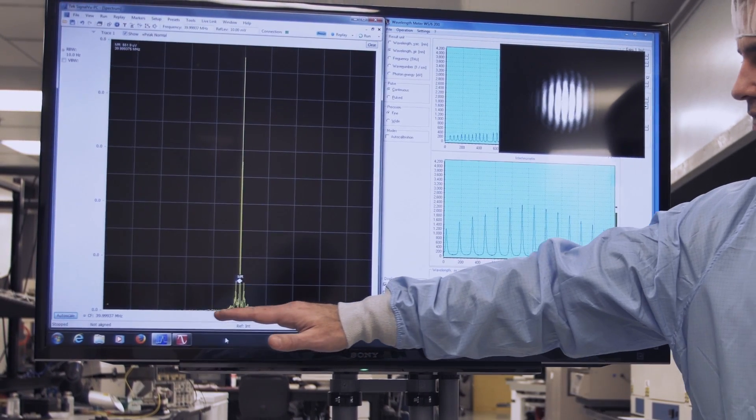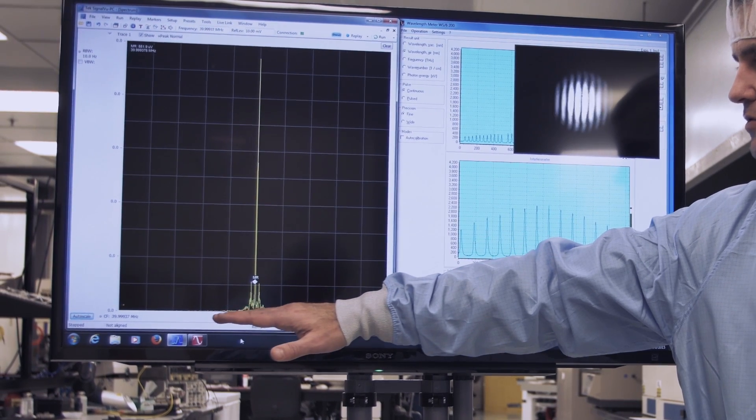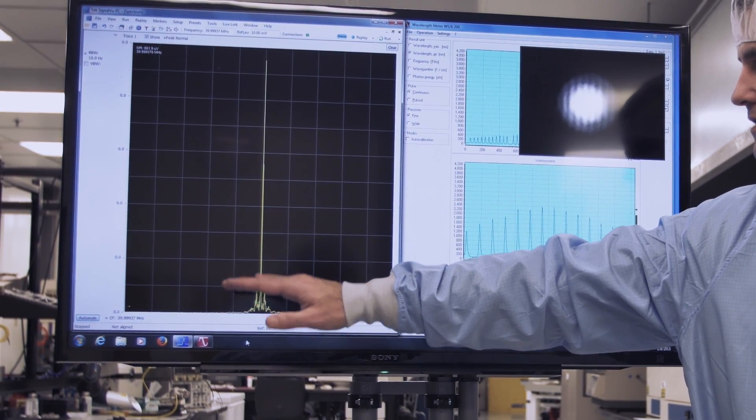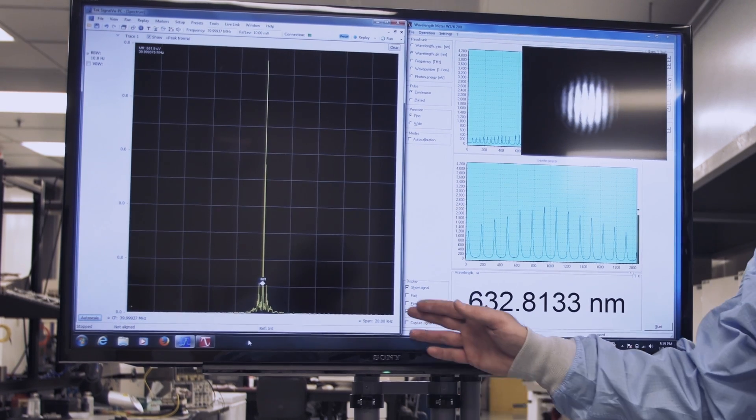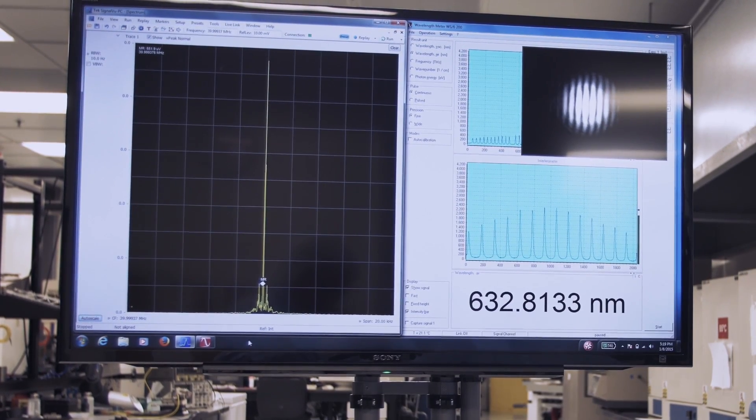The beat spectrum of the laser is showing the true line width of the laser, or instantaneous line width, and is well under one kilohertz, since the whole span on the screen is 20 kilohertz in this case.